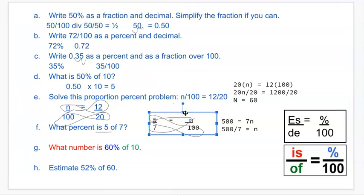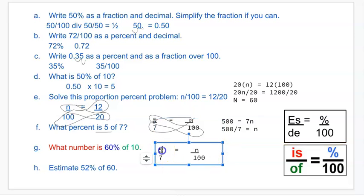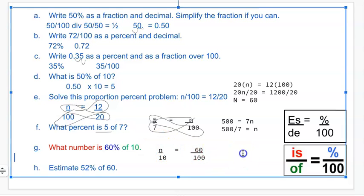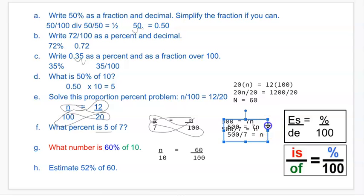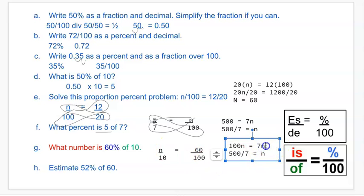So is is our unknown. Our bottom number of is 10, and our percent is 60 over 100. Cross multiply would get you 100N on the side, and then 60 times 10 is 600. Divide both sides by 100 and you'll get N equals 6.